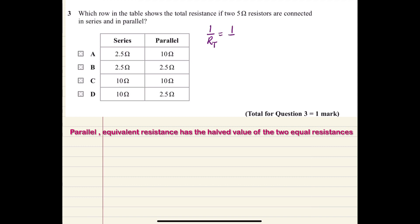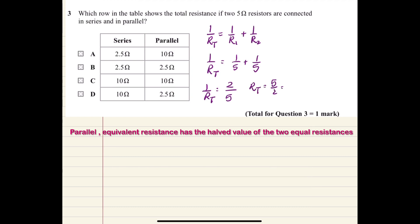So one over R total equals one over five plus one over five, which gives one over R total equals two over five. Therefore R total equals five over two, which is 2.5 ohms.